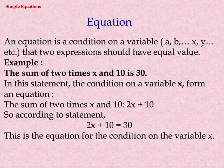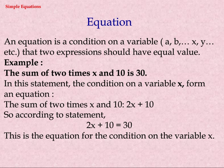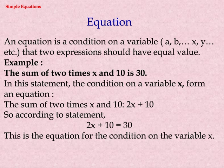Example: The sum of two times x and ten is thirty. In this statement, the condition on variable x forms an equation. The sum of two times x and ten is written as two x plus ten, so according to the statement: two x plus ten equals thirty. This is the equation for the condition on the variable x.